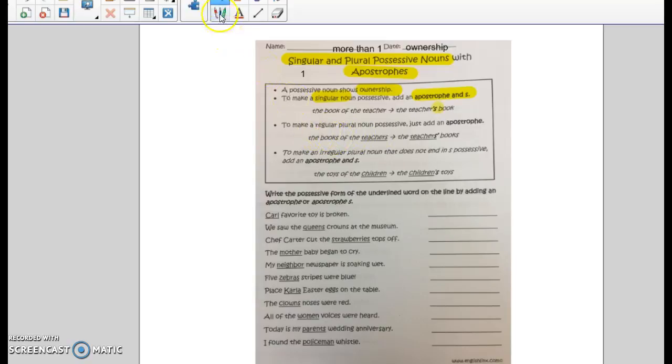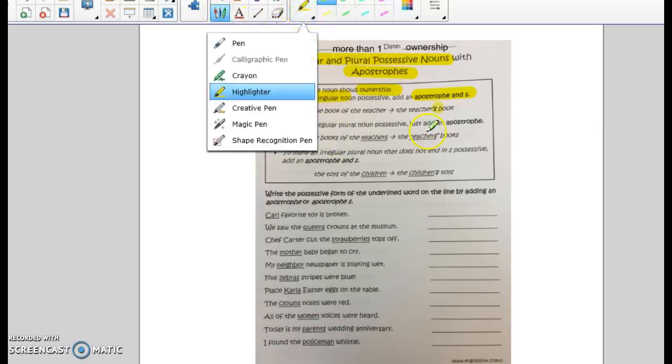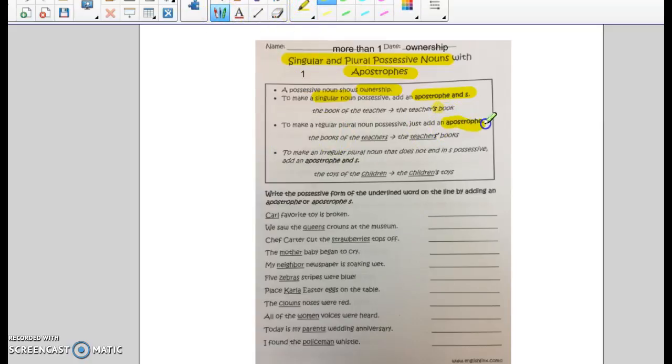To make a regular plural noun possessive, just add an apostrophe. Because it's plural, it already has the S on the end. So therefore, you just put the apostrophe after the S, and that way you can tell that they're talking about more than one teacher. Because if you cover it up from the apostrophe on, you still have teachers.